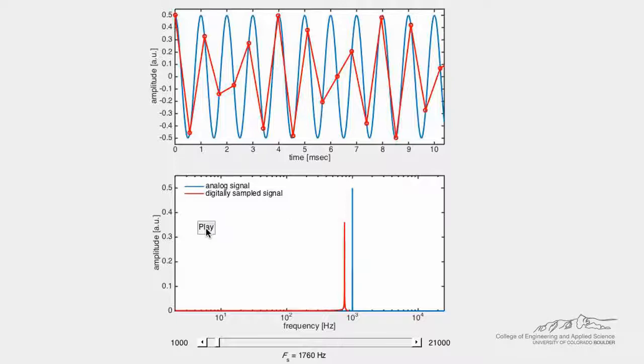If we press this play button, we will hear the effect of aliasing. The first tone is the original analog signal, and the second tone is the digitally sampled signal.